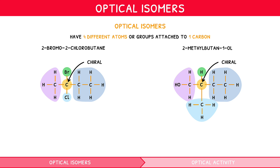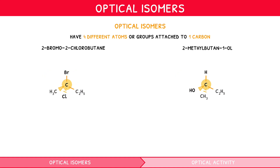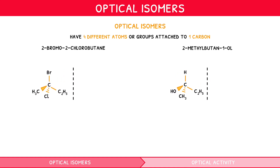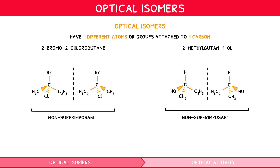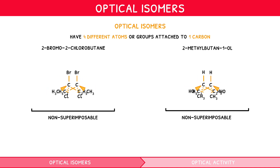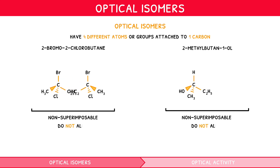Drawing each molecule in a tetrahedral arrangement centred around their chiral carbon, we create the following structures. Using a dotted line to denote a mirror, we can then draw a non-superimposable mirror image for each molecule, completing two enantiomers for each. Note: non-superimposable means that when placed on top of one another, the two enantiomers do not align.